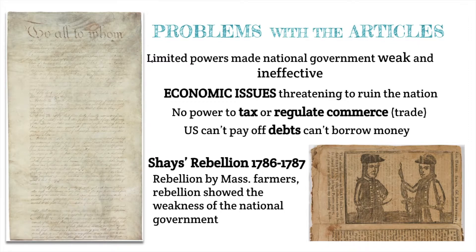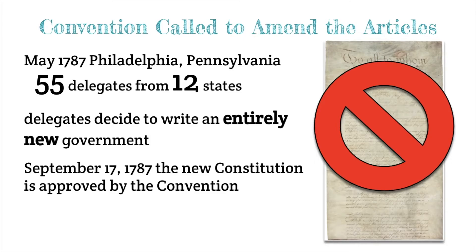The Articles of Confederation did not give the government the power to collect taxes or to regulate commerce or trade. The United States was deeply in debt from the American Revolution and couldn't afford to pay off its debts to other nations. One of the major events that triggered the need for a revision of the Articles was Shays' Rebellion — an incident that showed people in power that the Articles needed to be revised. A convention was called to amend the Articles of Confederation. The initial plan was not to completely scrap the Articles, but rather to amend the problems and make some changes that would make it more efficient and effective.